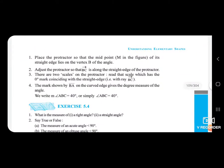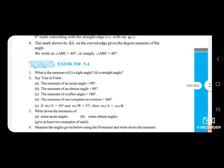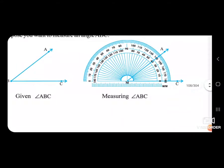Adjust the protractor so that ray BC is along the straight edge of the protractor. There are two scales on the protractor. Read the scale which has the zero degree mark coinciding with the straight edge and with ray BC. The mark by ray BA on the curve gives the degree measure of the angle. We write: measure of angle ABC is equal to 40 degrees.